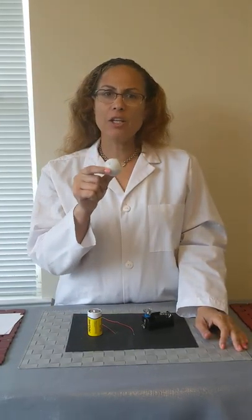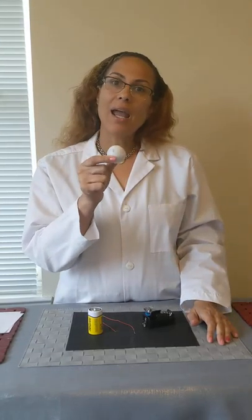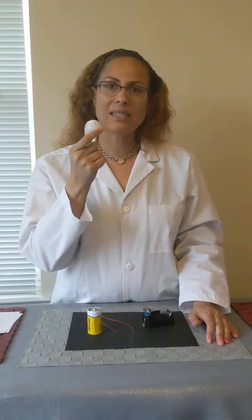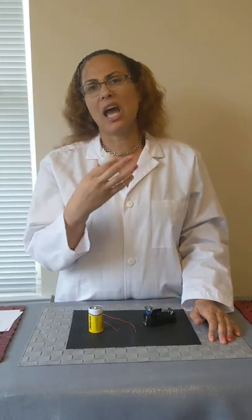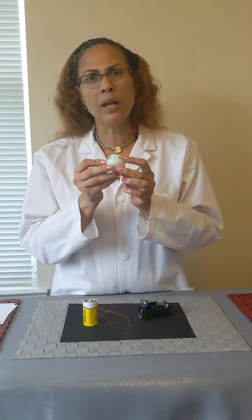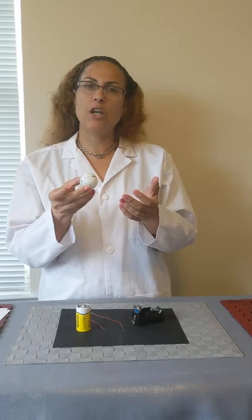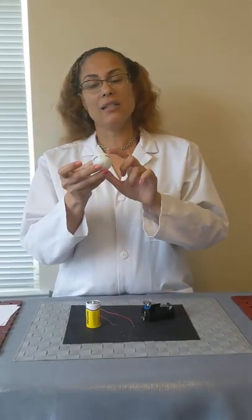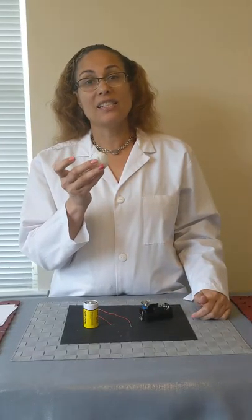Here's this energy ball. And the energy ball is also a type of circuit. Right now, it's an open circuit because it's not on. The energy is not flowing through and it's not lighting up. But there's two pieces of metal on each side. And what I'm going to do is show you how the energy flows through your body and it's going to turn on this energy ball.